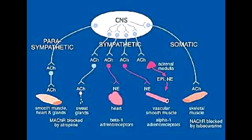What is the function of the somatic nervous system? The function of the somatic nervous system is to control all voluntary muscular systems within the body, with the exception of the reflex arcs. In the somatic nervous system, acetylcholine directly from the spinal cord activates the nicotinic receptors on the skeletal muscles.